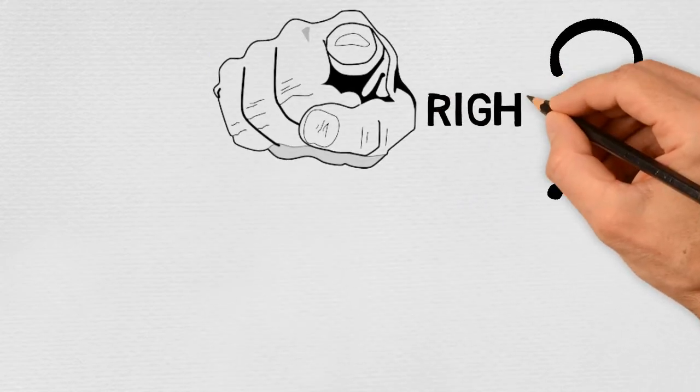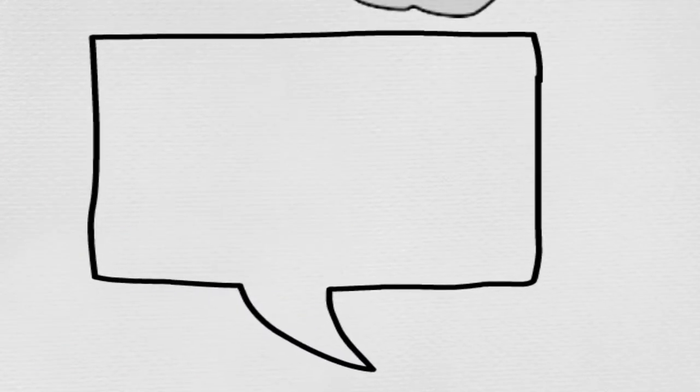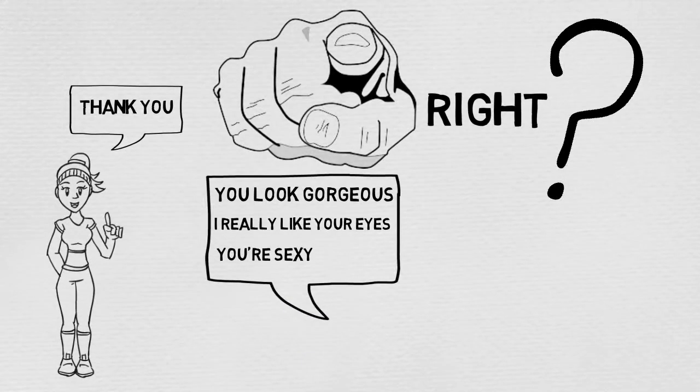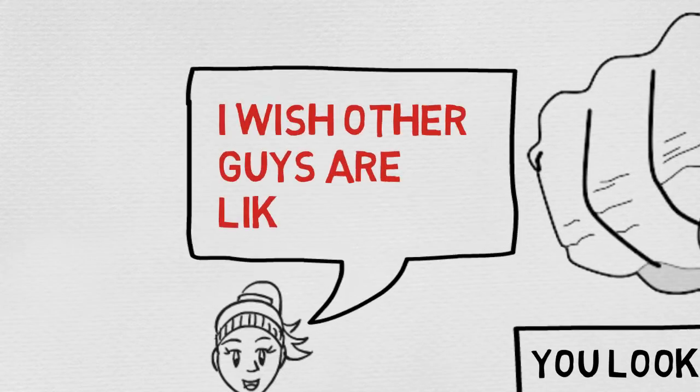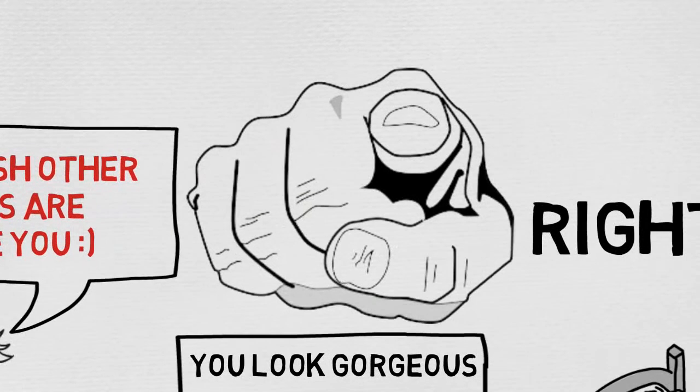So you are doing everything right when it comes to girls, right? I mean, you open doors for her, you compliment her every single day, you put your sleep aside to stay up with her, and she tells you, I wish other guys are like you. So why doesn't she go for you?